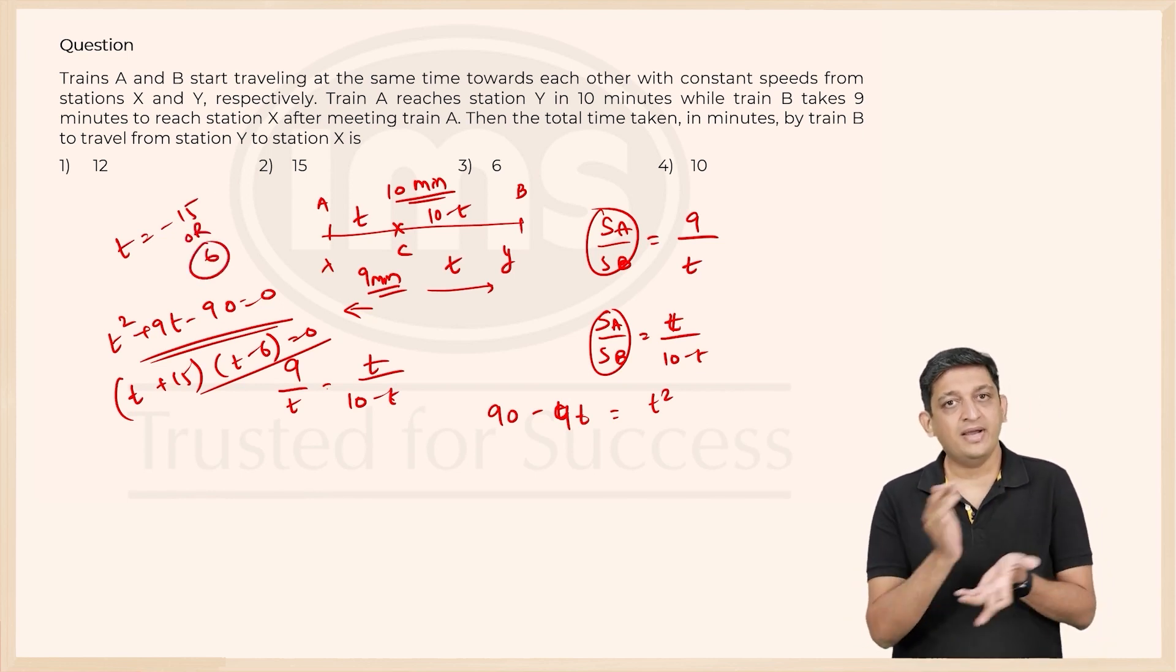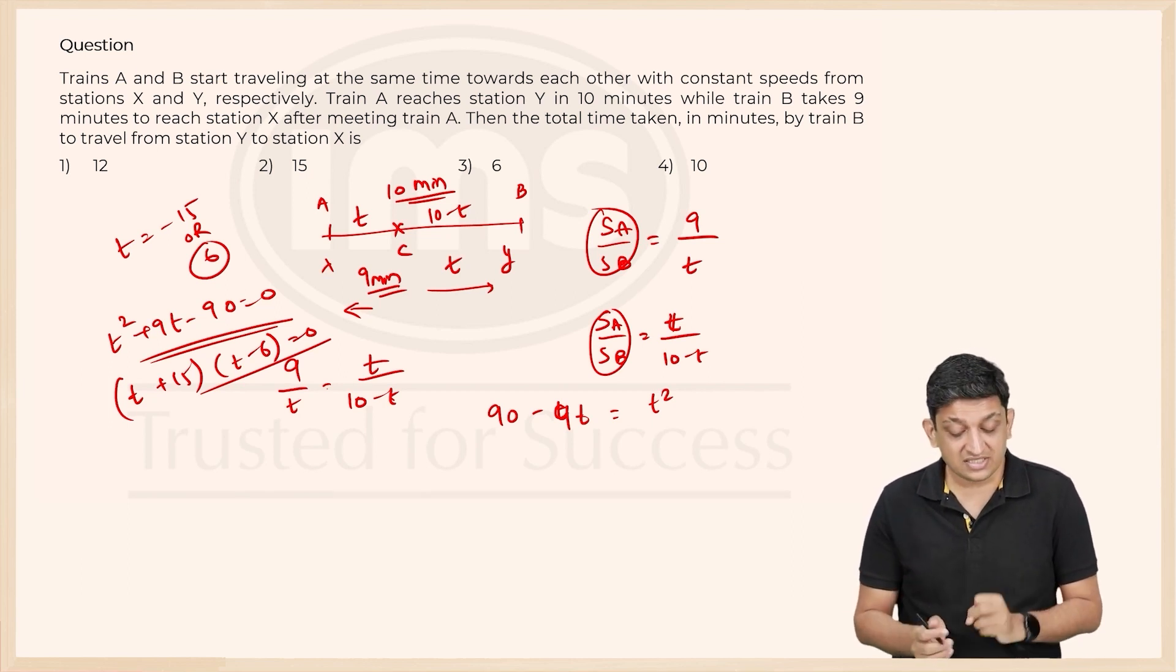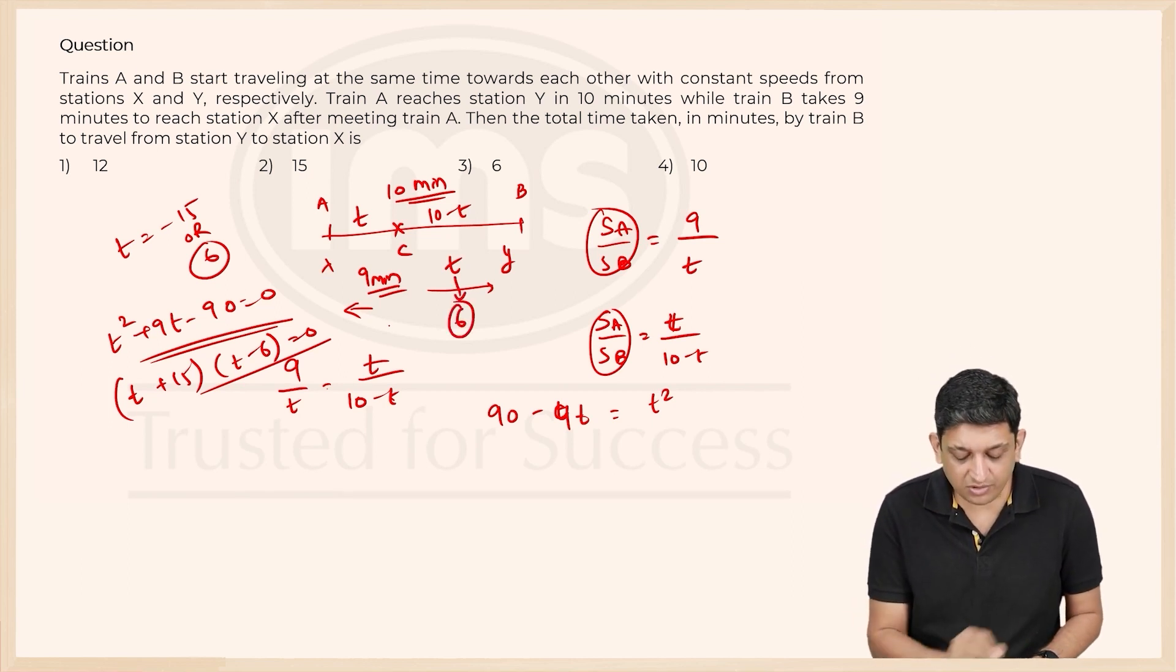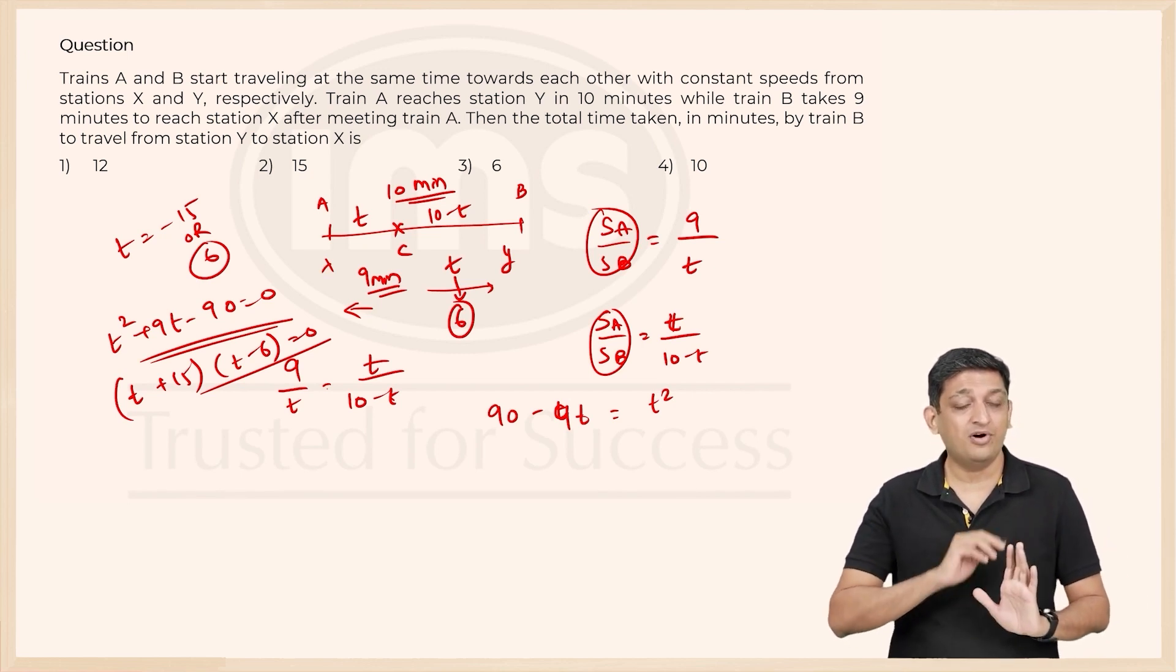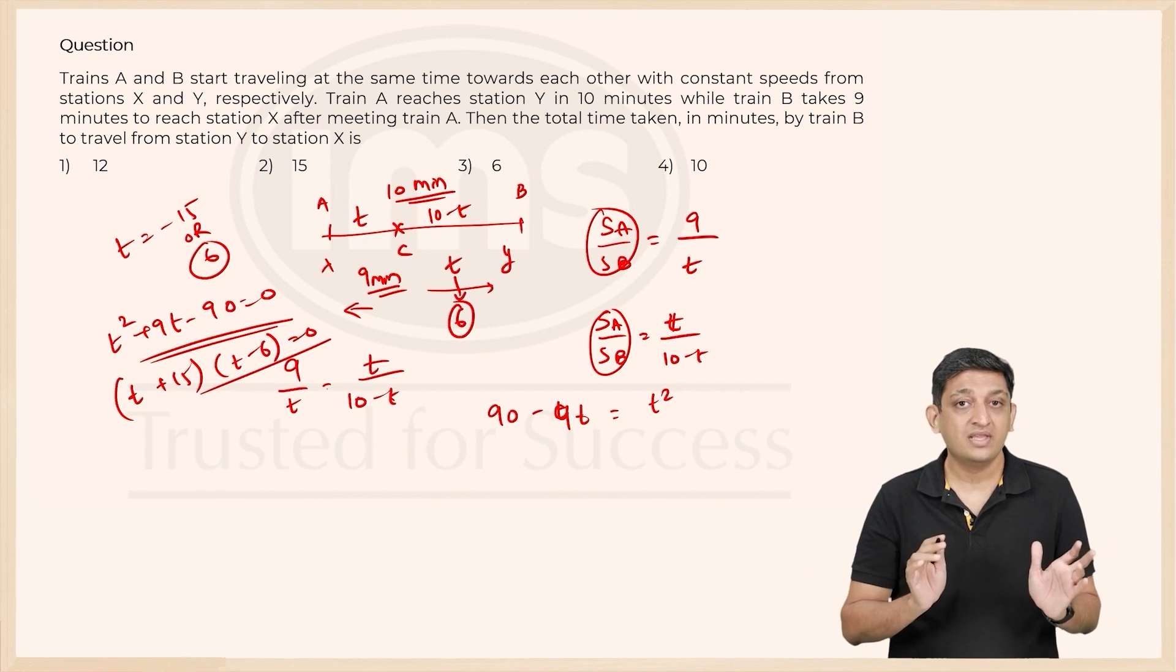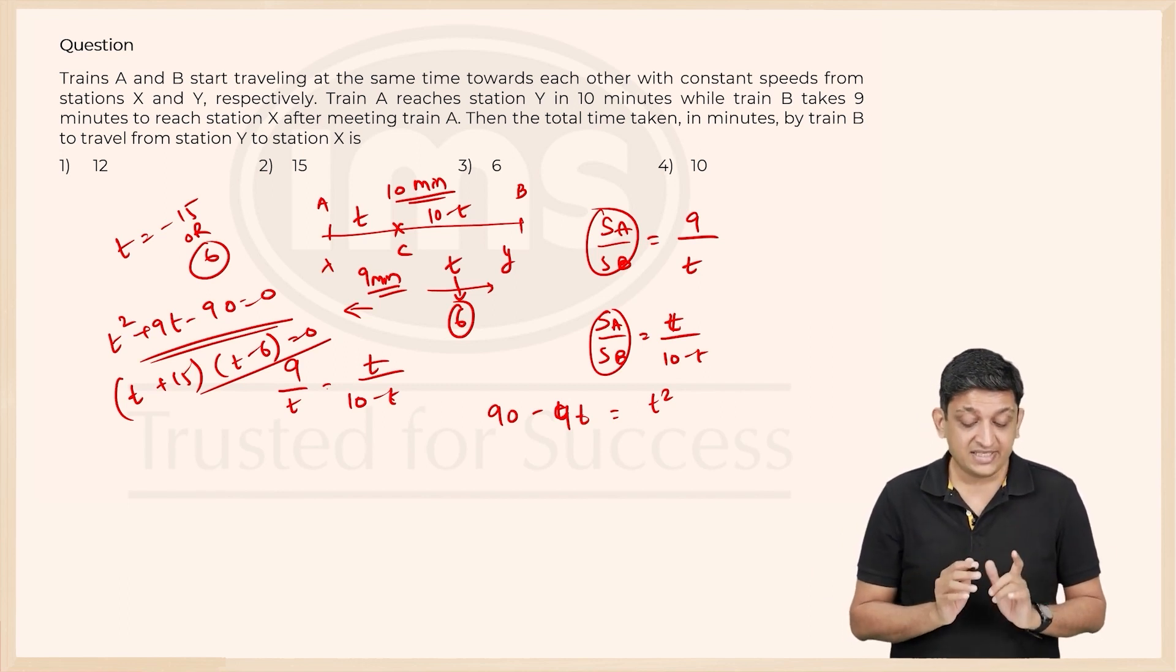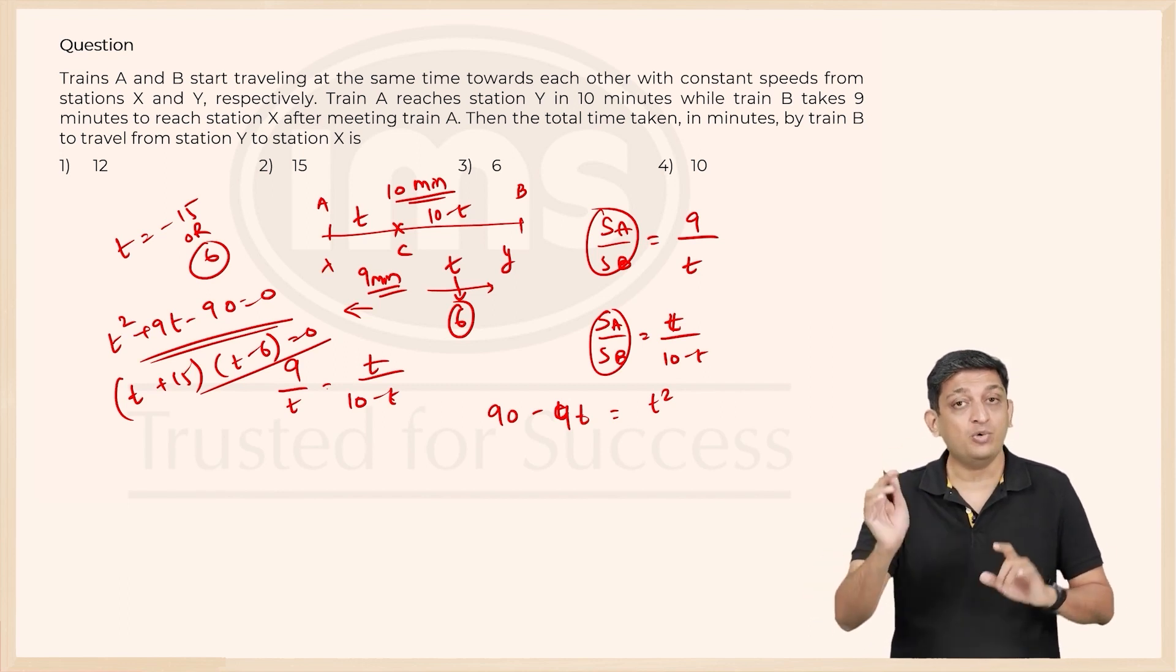Now time taken cannot be minus 15, so time taken has to be equal to 6. So this T will be equal to 6. But the question does not ask how much time does it take for B to go from Y to C. It asks us how much time is taken by train B to go from Y to X.